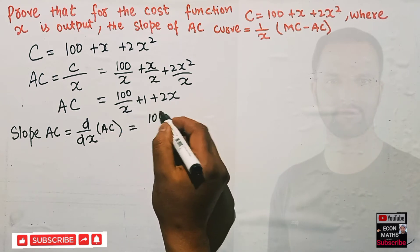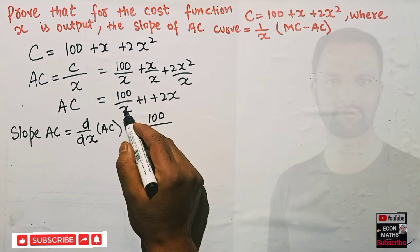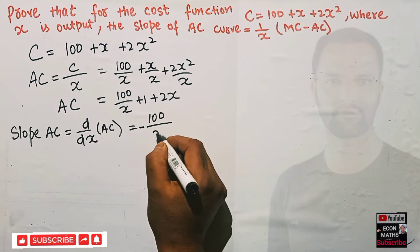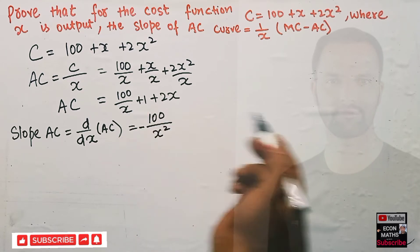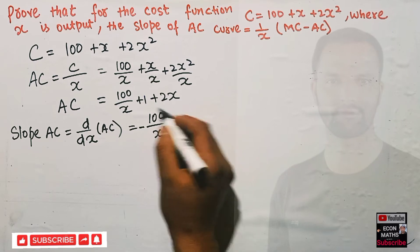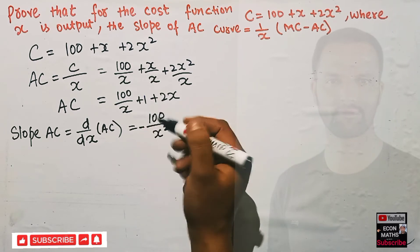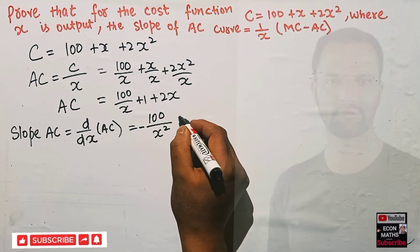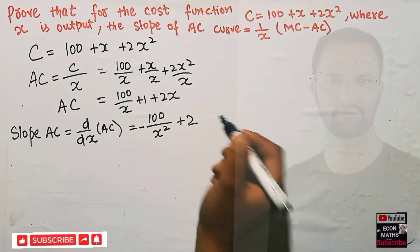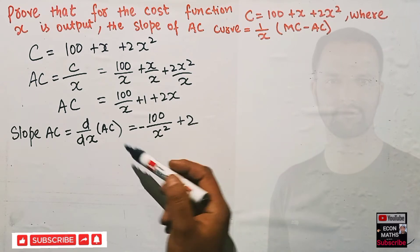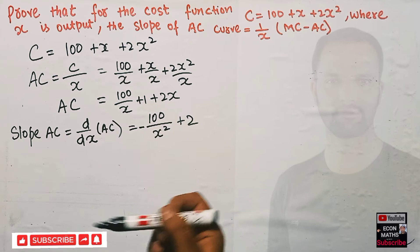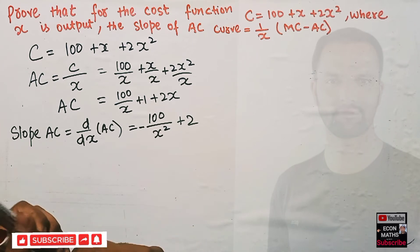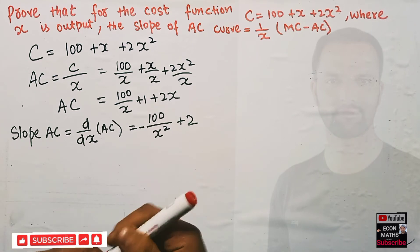The derivative of 100/x is 100 × (−1/x²) = −100/x². The derivative of the constant 1 is 0, and the derivative of 2x is 2. So the slope of average cost is −100/x² + 2.